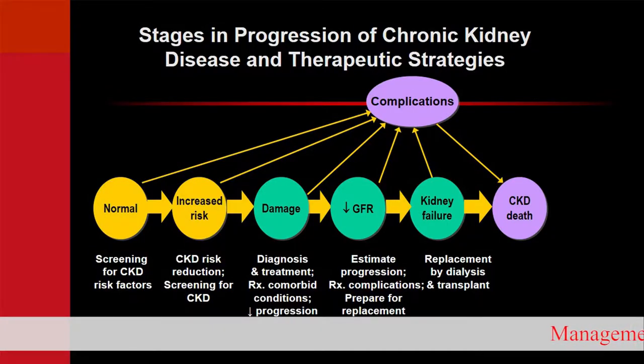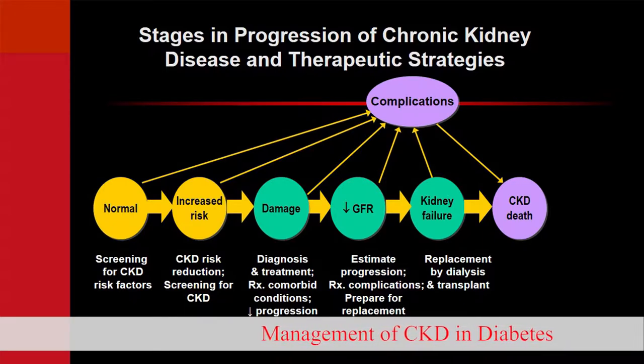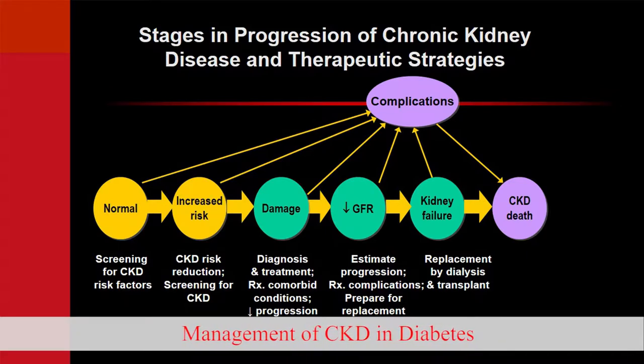Primary care physicians must screen for CKD risk factors in every at-risk patient. If you identify a risk factor, reduce it and screen for CKD. If you find a raised ACR, reduce CKD progression, treat comorbidities, and delay progression. If GFR is declining, estimate the rate of progression, treat complications, prepare for renal replacement therapy, and proceed with replacement when needed.